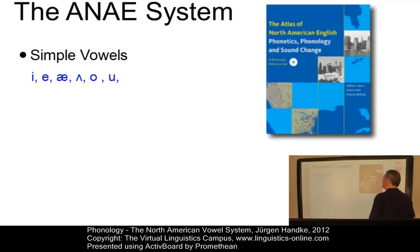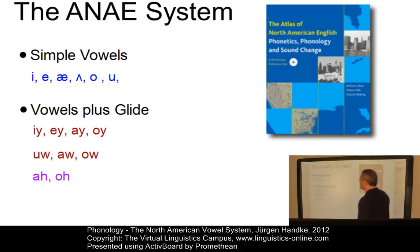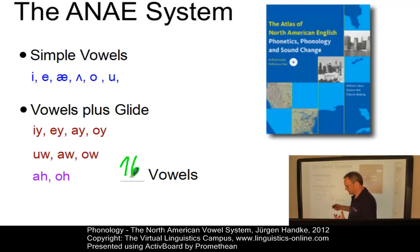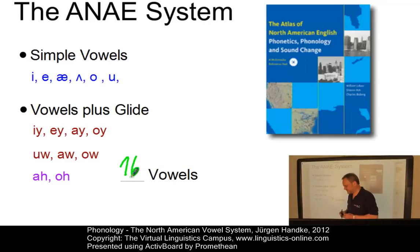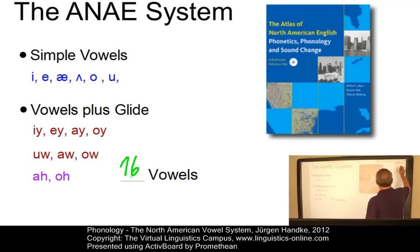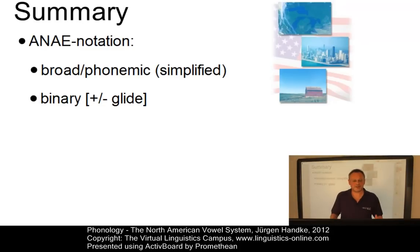This vocalic system, with six simple vowels and ten vowels that have a glide — a total of 16 vowels — can now be clearly subdivided into simple vowels and vowels with a glide. Length does not play a role anymore.